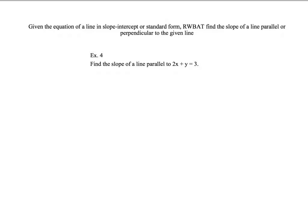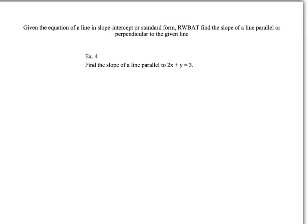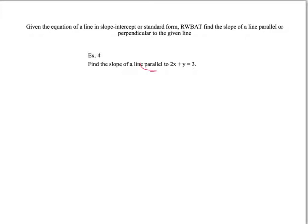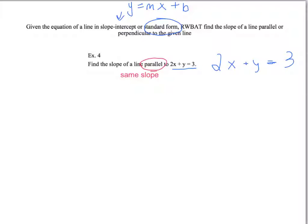Example 4: find the slope of a line parallel to 2x plus y equals 3. Notice that this line is in standard form, not slope-intercept form. Slope-intercept form is y equals mx plus b — it gives you the slope right away. Standard form doesn't. What we're going to do is convert this line from standard form into slope-intercept form.